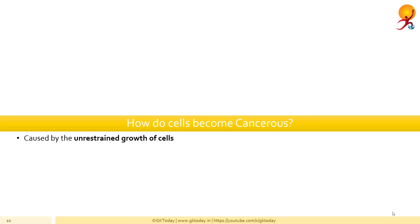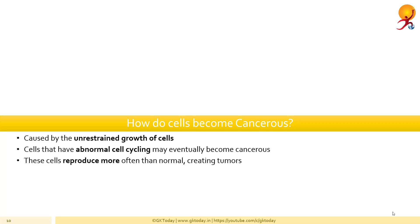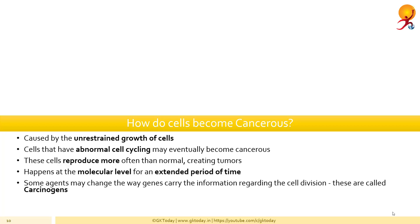Cancer is caused by the unrestrained growth of cells. Cells that do not follow the rules of normal cell cycling may eventually become cancerous. This means that the cells reproduce more often than normal, which leads to creating tumors. Usually this happens over an extended period of time and begins with changes at the molecular level. Our body has trillions of cells and all cells replicate in normal fashion. However, some agents may change the way genes carry the information regarding cell division and thus cells become cancerous. Such genes are called oncogenes and such agents are called carcinogens.